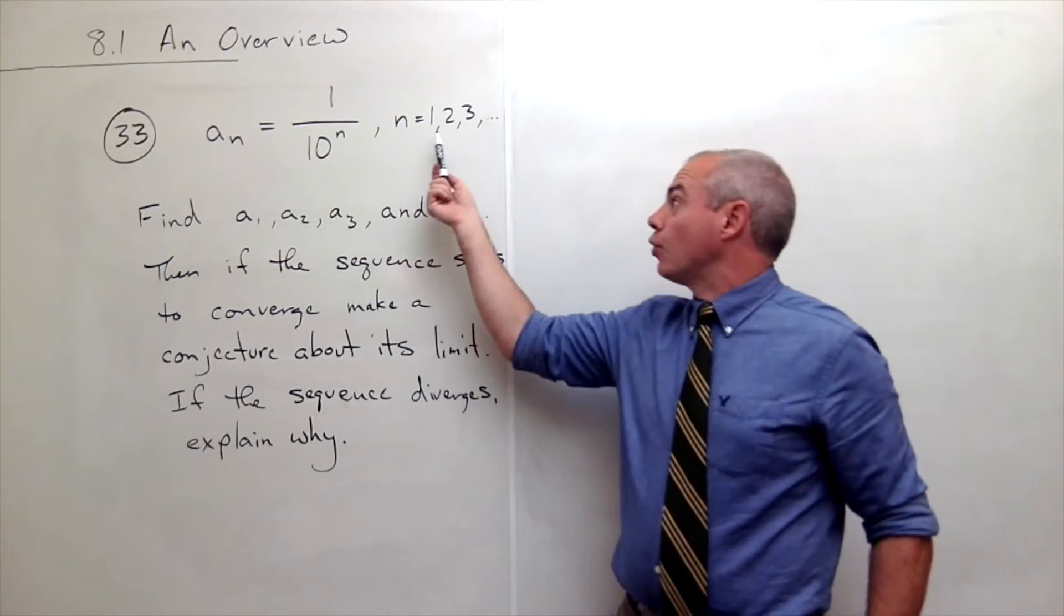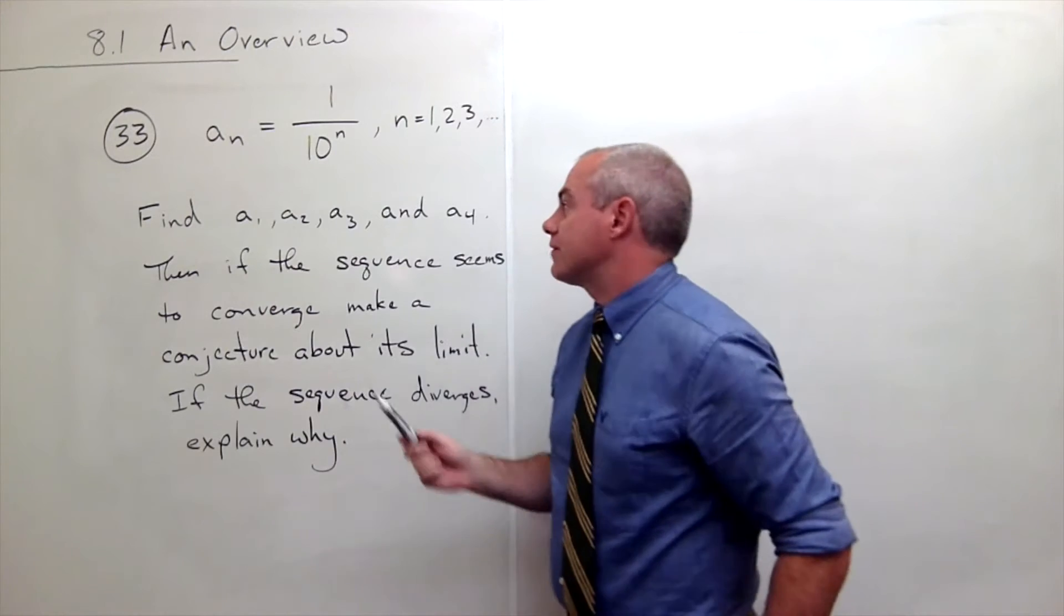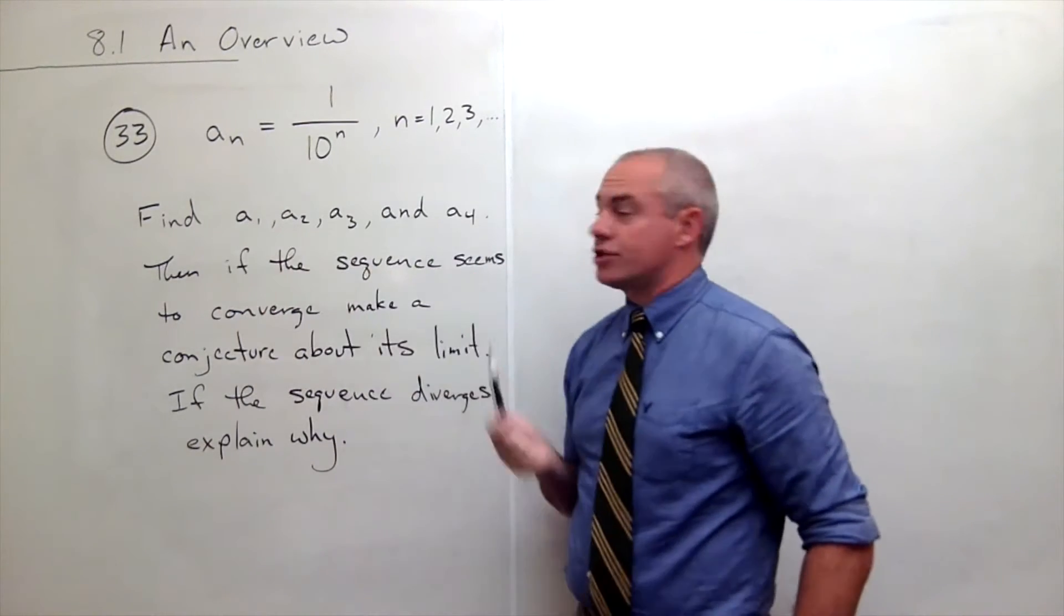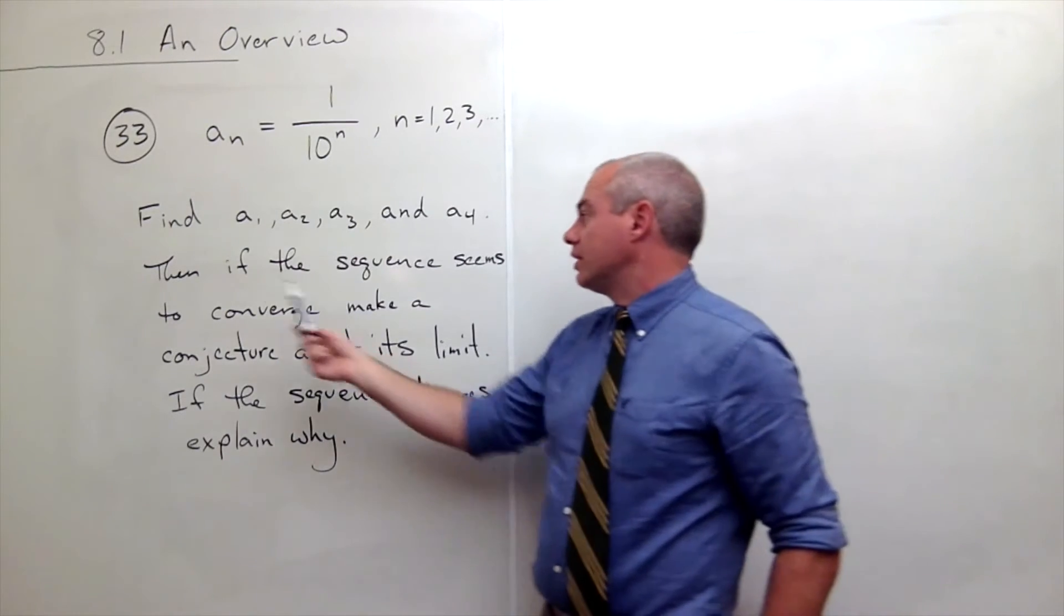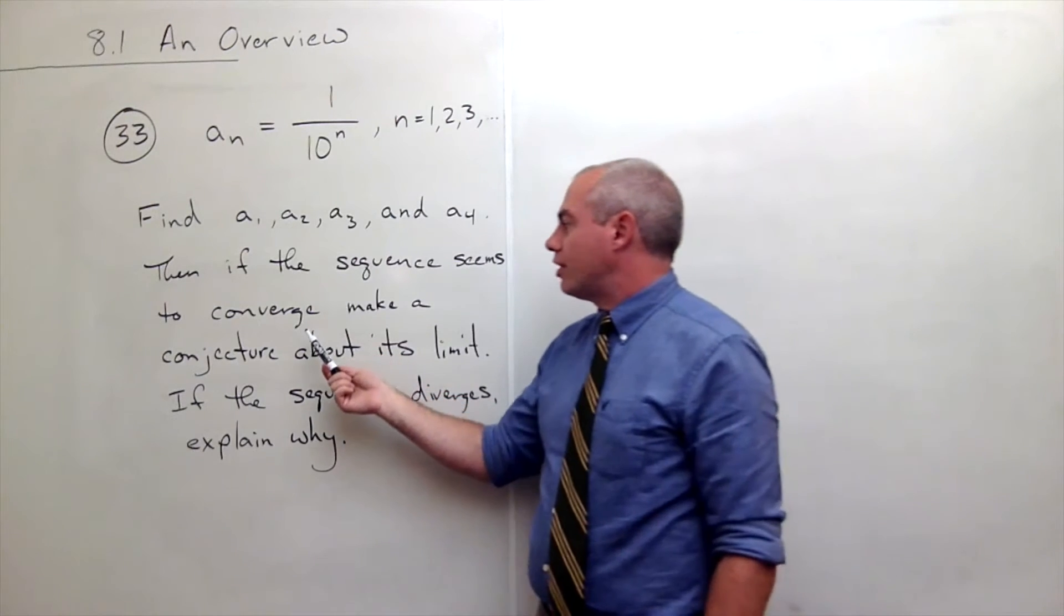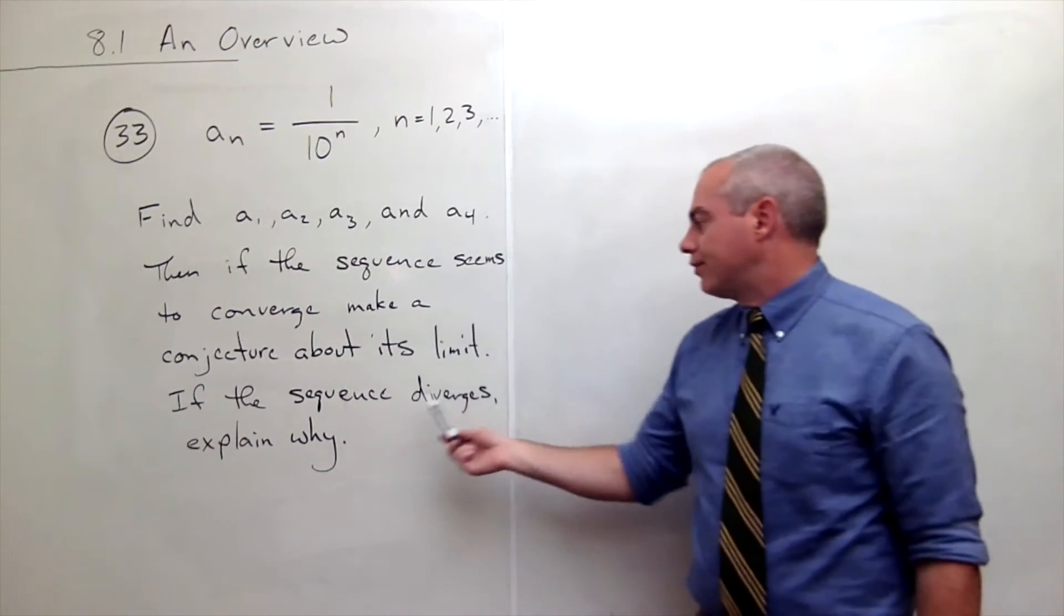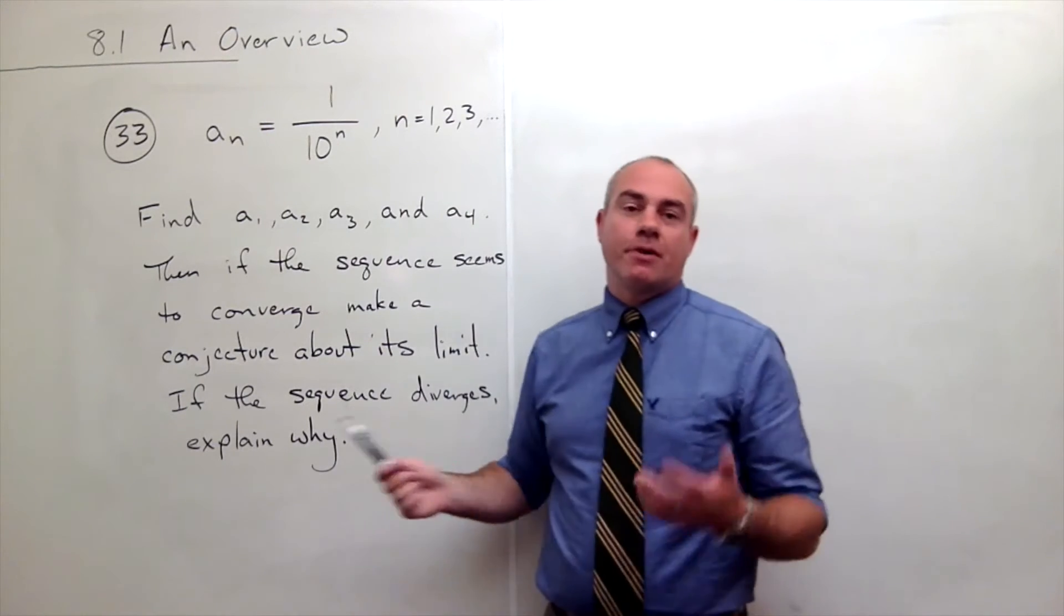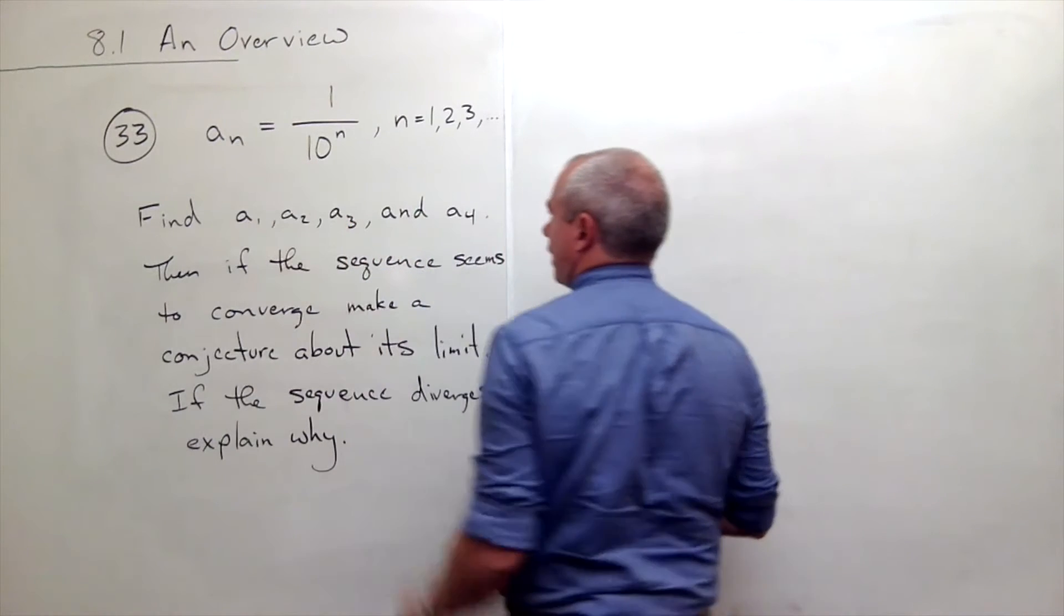For n equals 1, 2, 3, and so on. What we'd like to do in this problem is first find the first four terms of the sequence: a1, a2, a3, and a4. Then we'd like to say if this thing seems to converge, what we think it converges to. If this thing diverges, explain why it diverges. Let's take a look at this and see what we think.